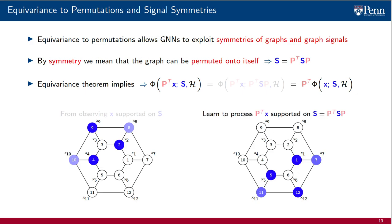We can therefore claim that a GNN learns to process the permuted signal P-transpose X supported on S from learning the processing of the non-permuted signal X, which is also supported on S. This effectively multiplies the size of the data set because the signal X is doubling for the signal P-transpose X, and for any other signal that has the same symmetry.